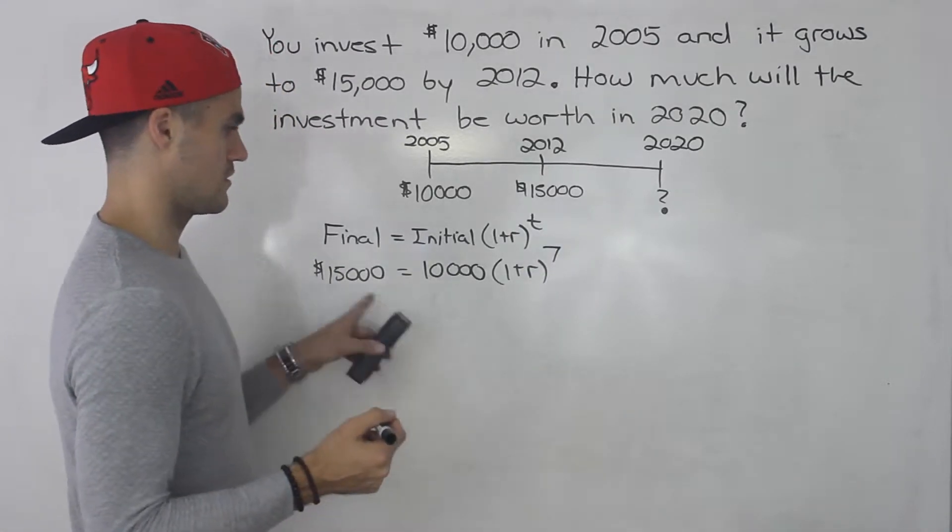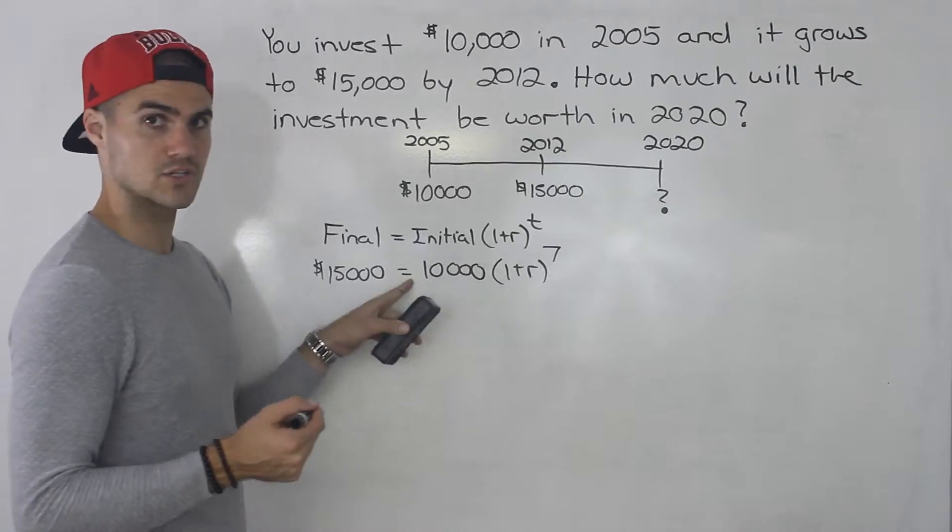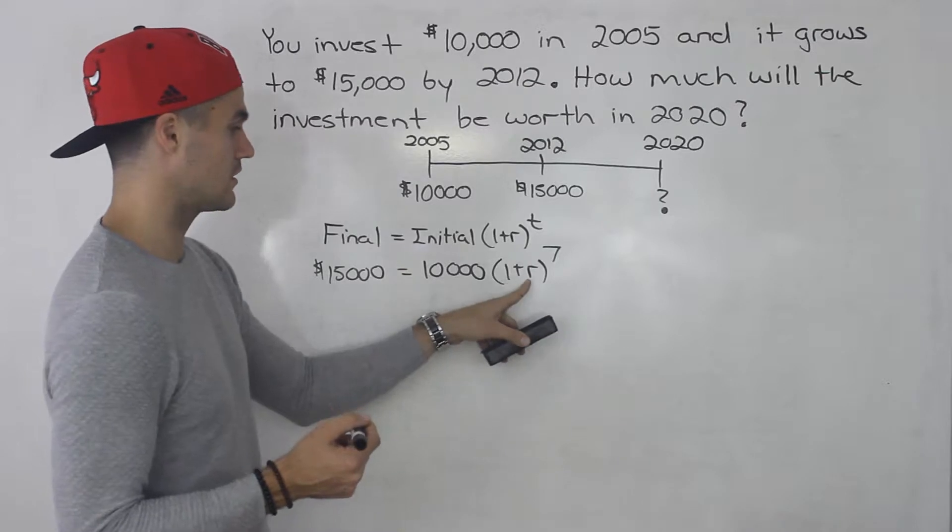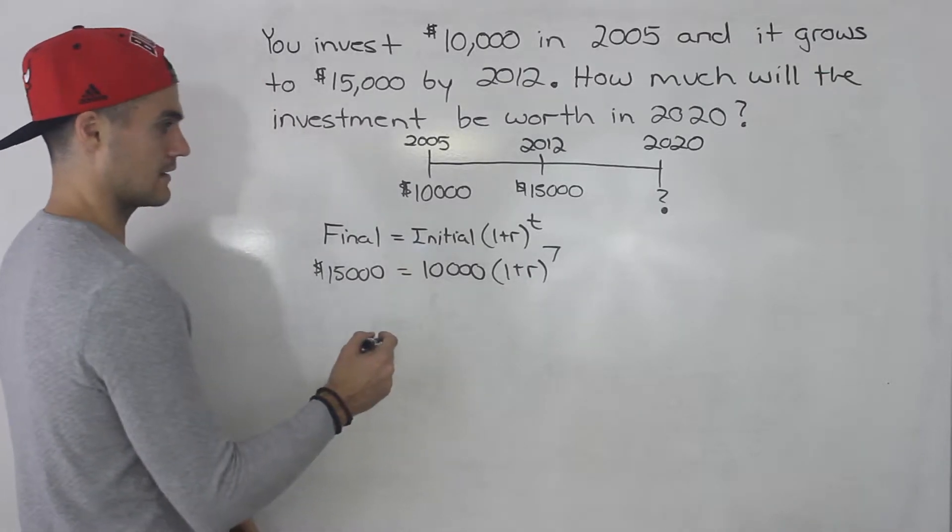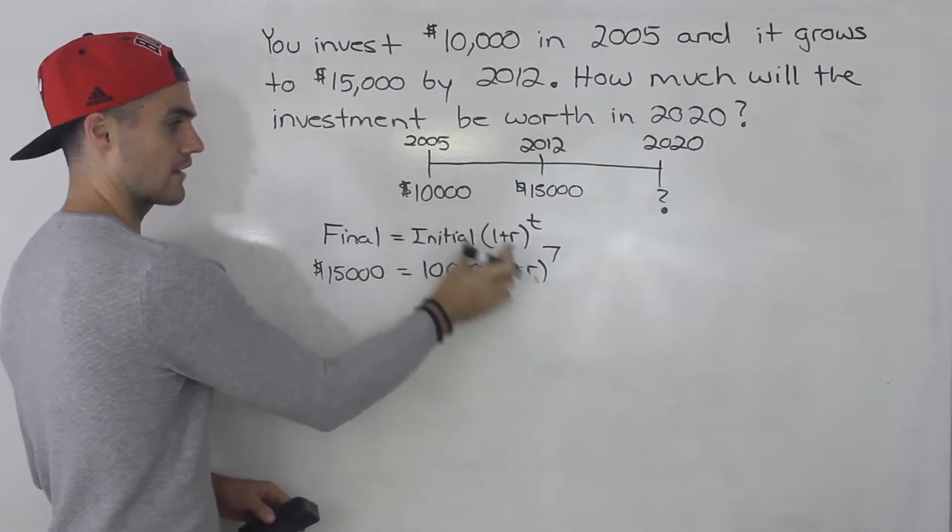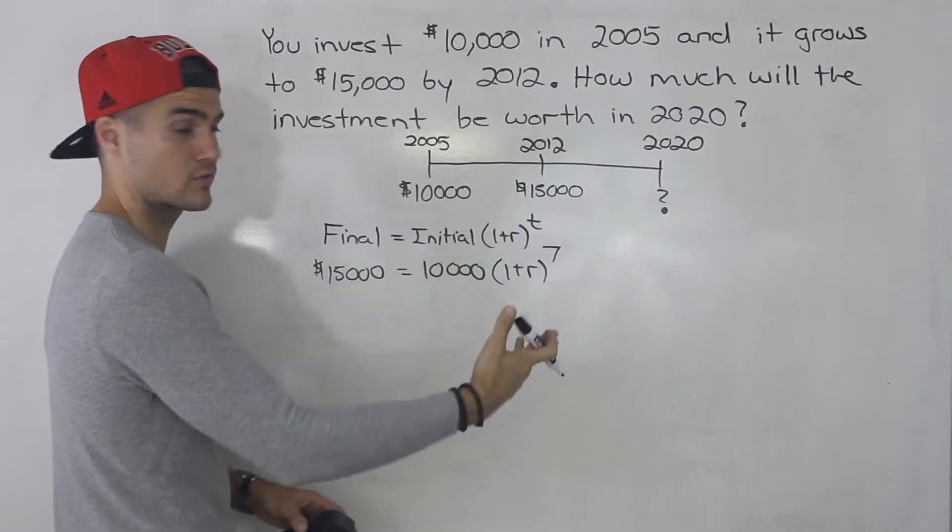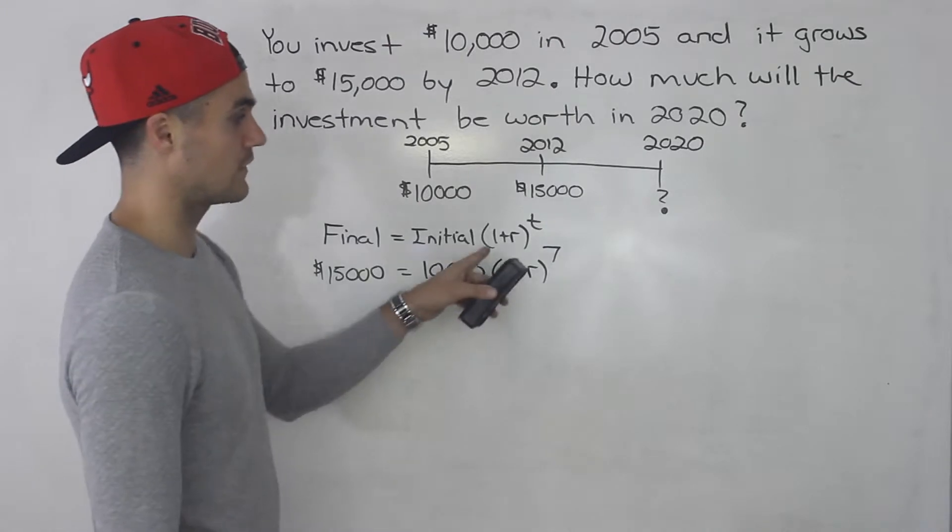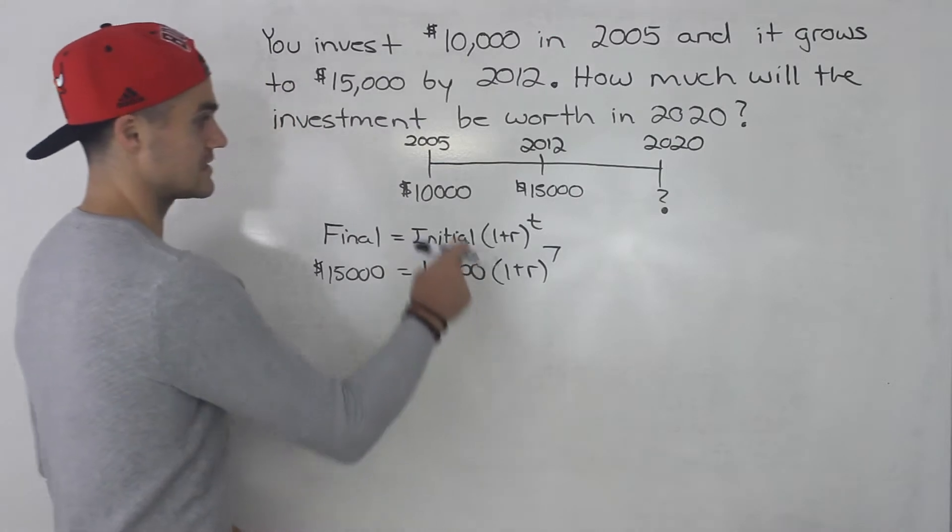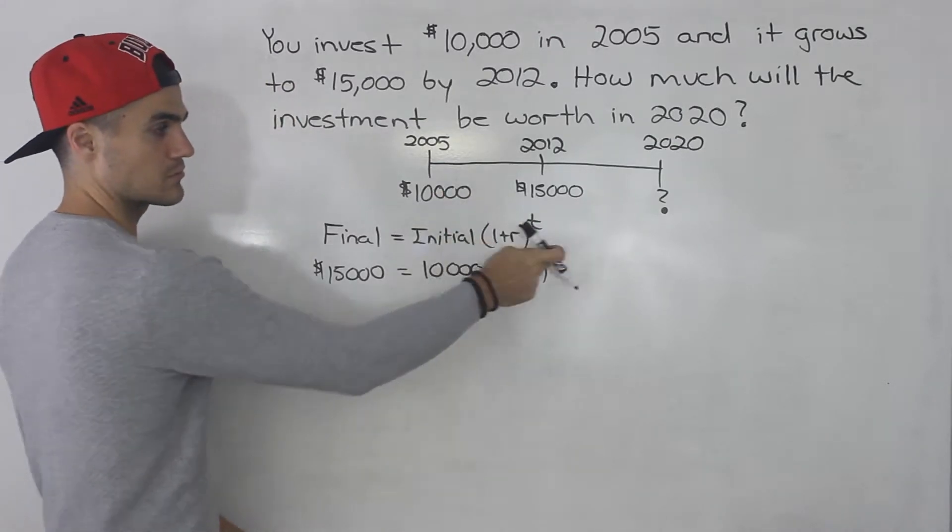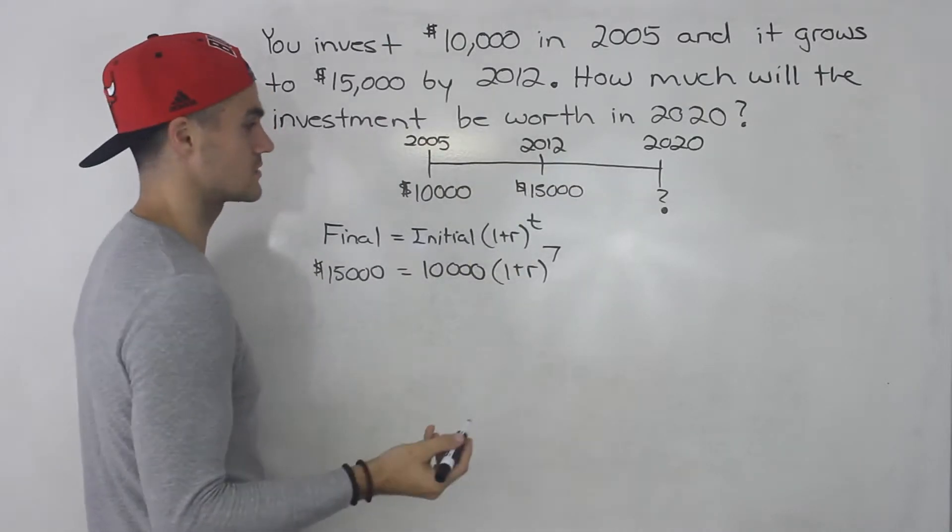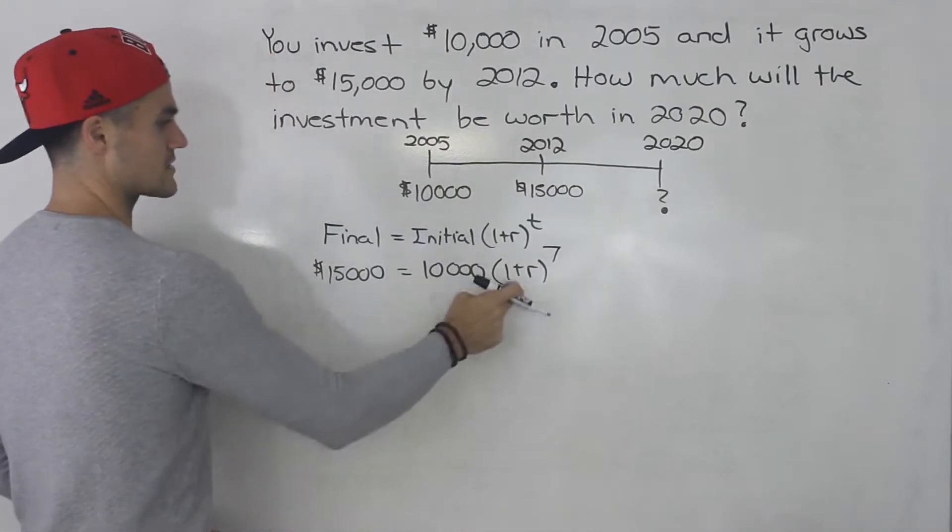Notice that in this equation what we're going to be solving for is the growth rate. We can solve for that r here and once we solve for that r then we have a general formula. Initial value times (1 plus whatever that growth rate is) and then we could figure out with that formula what the value is going to be in 2020. The t value is going to be 15 then, because from 2005 to 2020 that's 15 years. But before we do that let's solve for this r.